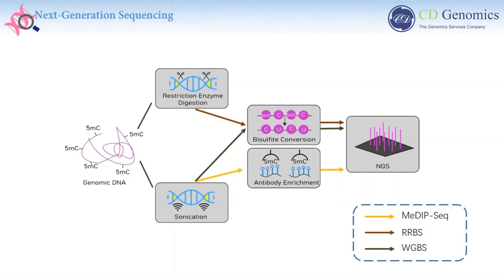The DNA fractions enriched by MeDIP can be evaluated using high-throughput sequencing. Both WGBS and RRBS are based on bisulfite conversion. Sodium bisulfite deaminates unmethylated cytosines to uracil, while methylated cytosines remain unaffected. The uracil eventually converts to thymine in a subsequent PCR. Compared to WGBS, RRBS is more cost-effective because it focuses on enrichment of CpG-rich regions via MSP restriction enzyme digestion, and has been widely used for large-scale analysis.